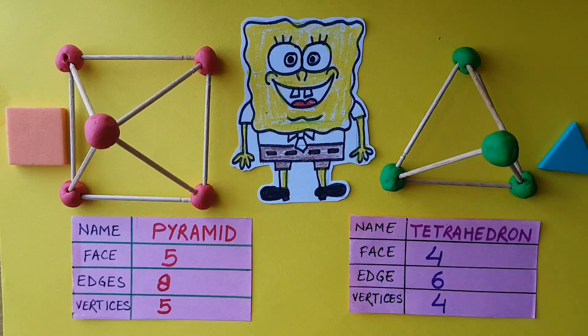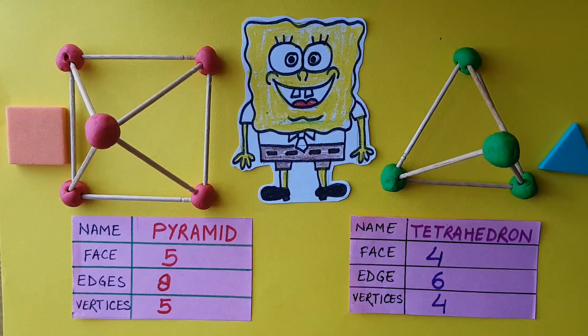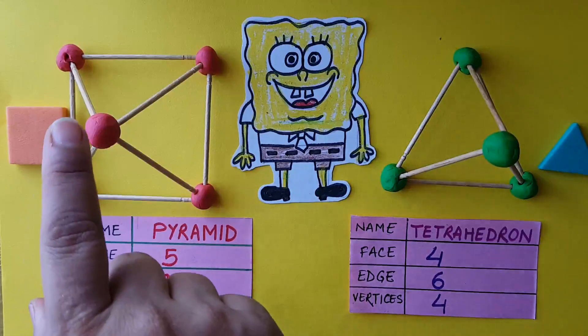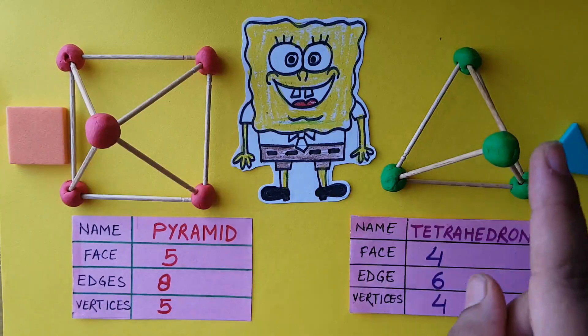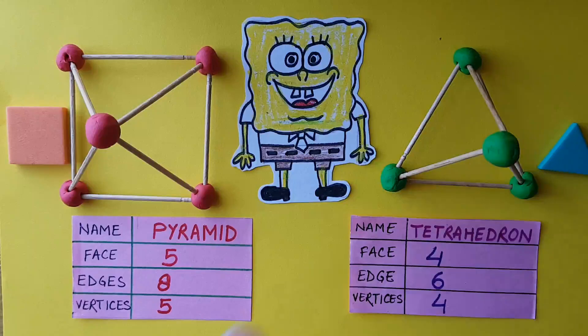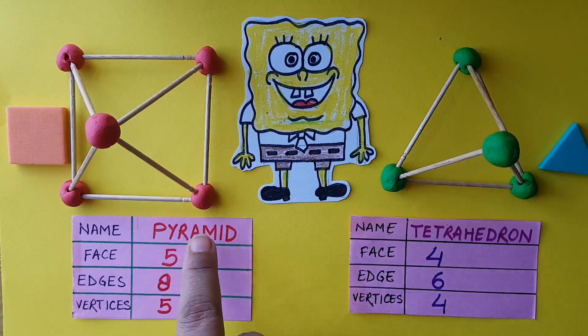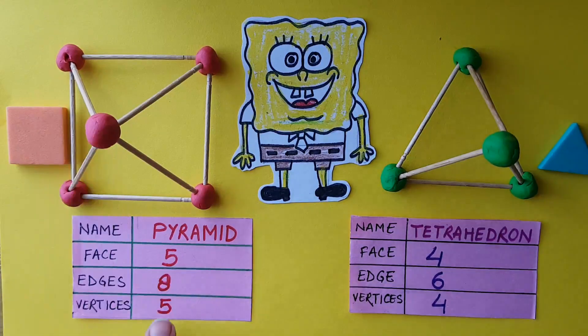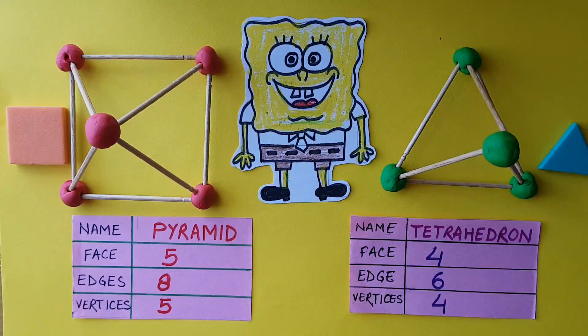Now come to the vertex. We use clay balls here. Look here, the red clay balls and the green clay balls. Pyramid - we use five clay balls, that means these five are the vertices of that shape, pyramid.